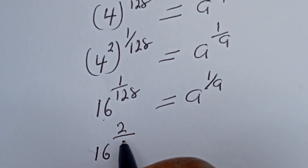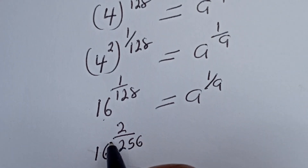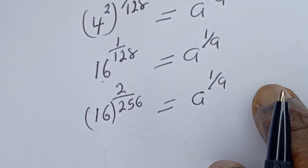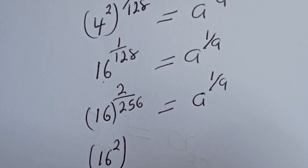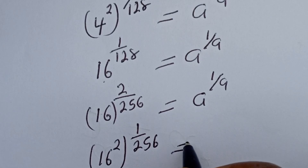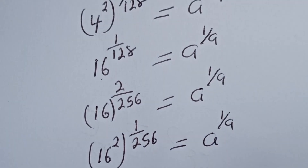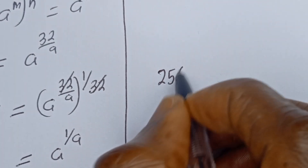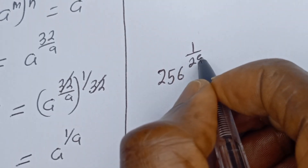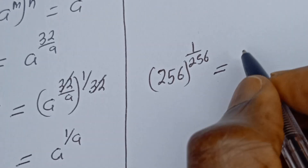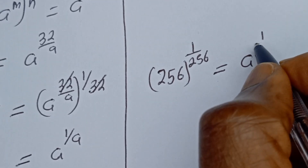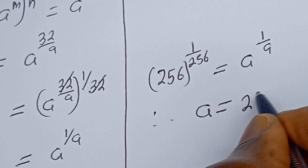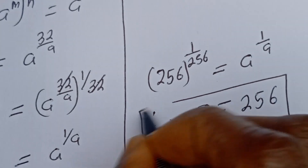Now 16 to the power of 1 over 128 can be written as 16 to the power of 2 over 256, equal to a to the power of 1 over a. This can be written as 16 squared to the power of 1 over 256 is equal to a to the power of 1 over a. Since 16 squared is 256, we have 256 to the power of 1 over 256 is equal to a to the power of 1 over a. Therefore, a is equal to 256, and this is the final answer.